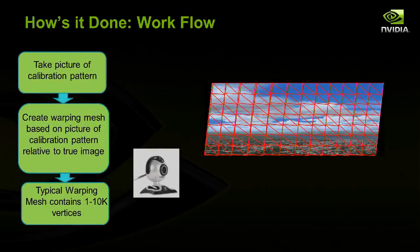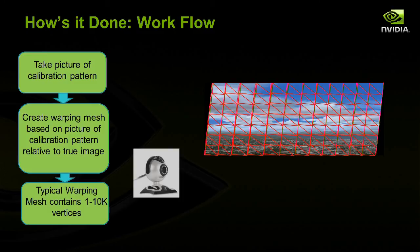The way it works is that you need to come up with a warping mesh. A camera takes a picture of calibration data, and based on where those calibration points show up in the picture, a warping mesh is generated and fed to our API, which then warps the scan-out coming from the GPUs. A typical warping mesh contains 1 to 10,000 vertices, so it's not a large primitive load. There is a performance consideration in that textures are defined for both the warping and intensity map, taking up memory in system memory and GPU video memory.